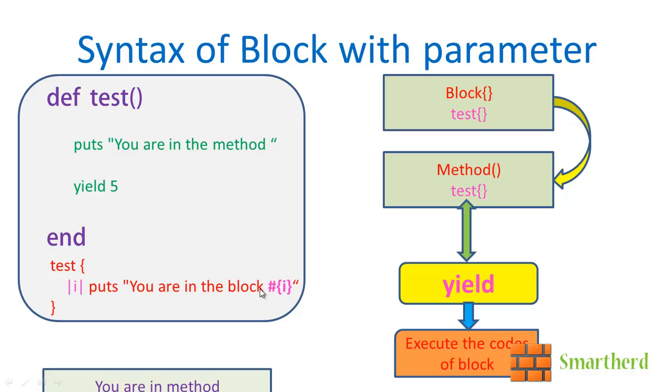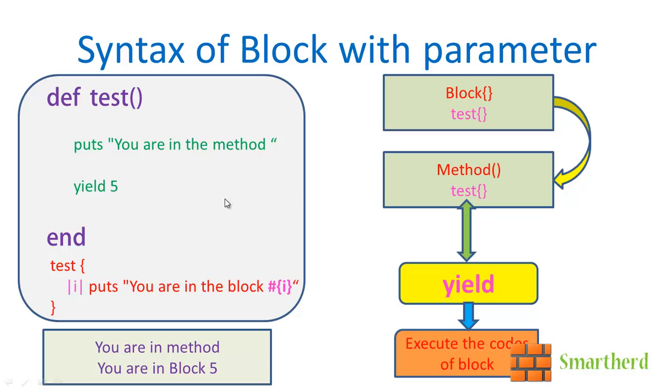So we get the output like this. You are in the method, this statement. Then you are in the block 5. Pretty easy guys. Very easy. Now let's move forward.